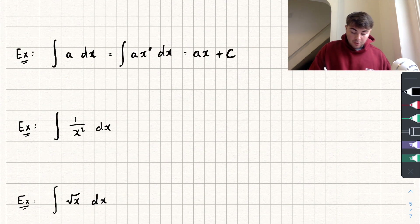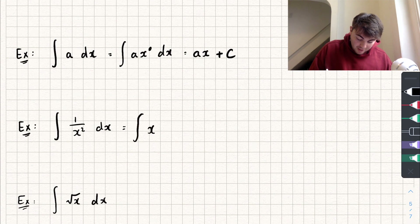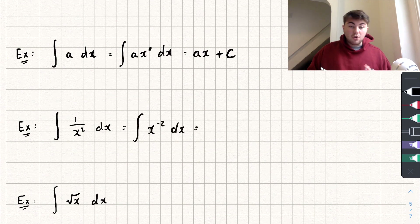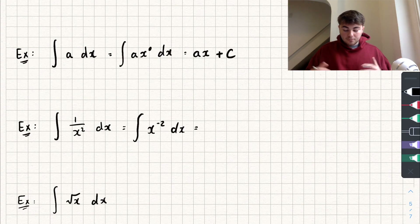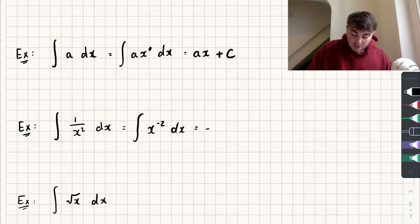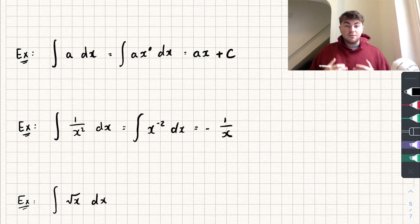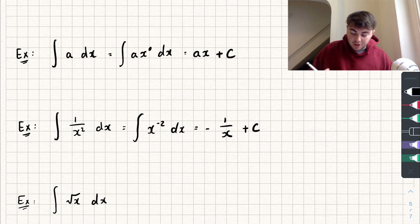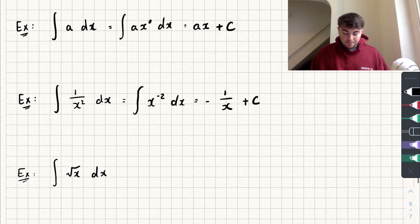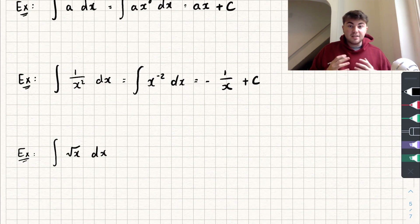The fourth example: the integral of 1/x², which we can rewrite as the integral of x to the power of negative two. We add one to the power to get x to the power of negative one, and dividing by negative one just makes it negative, so we get negative 1/x, or negative x to the power of negative one, plus the constant of integration, plus c.